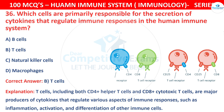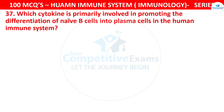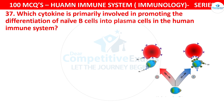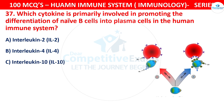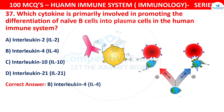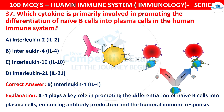Question 37: Which cytokine is primarily involved in promoting the differentiation of naive B cells into plasma cells in the human immune system? The options are Interleukin-2, Interleukin-4, Interleukin-10, or Interleukin-21. The correct answer is B, that is Interleukin-4. IL-4 plays a key role in promoting the differentiation of naive B cells into plasma cells, enhancing antibody production and the humoral immune response.